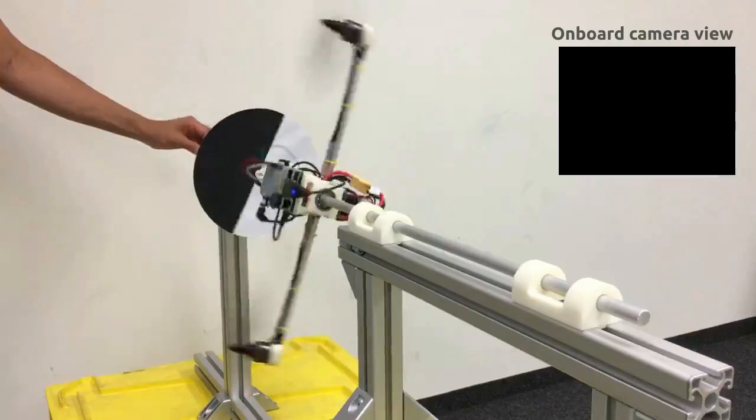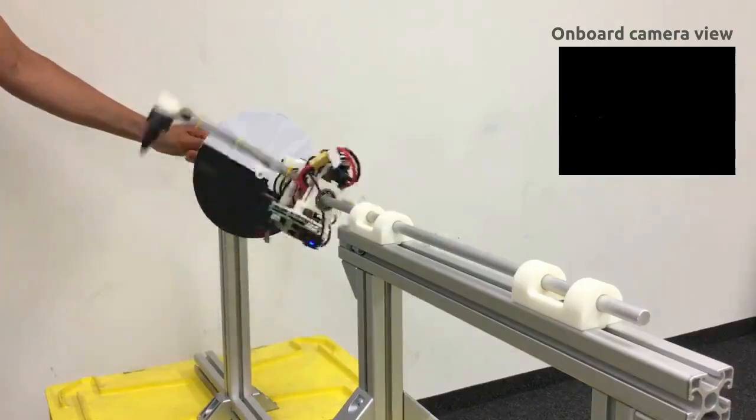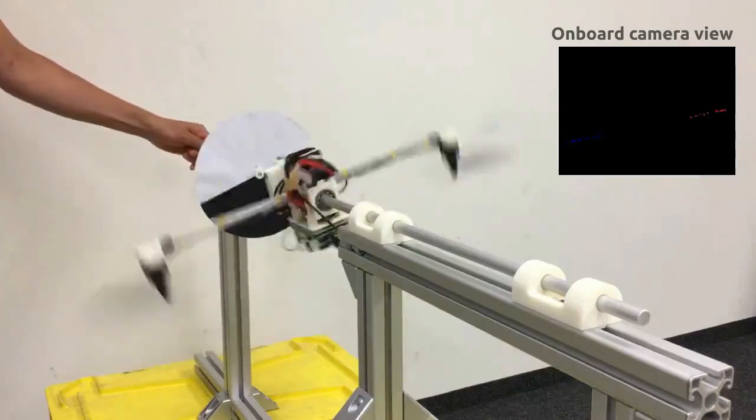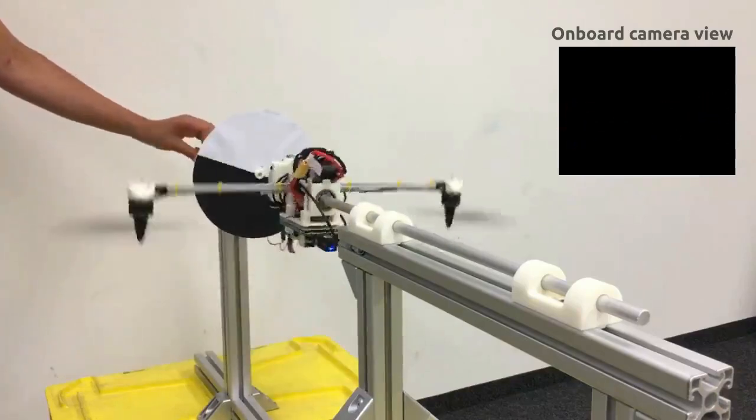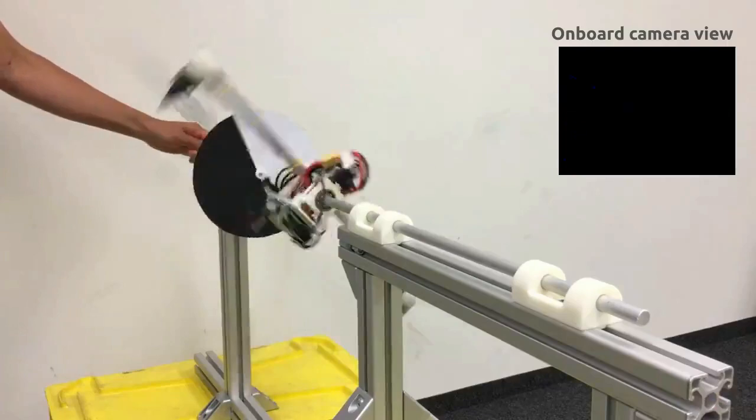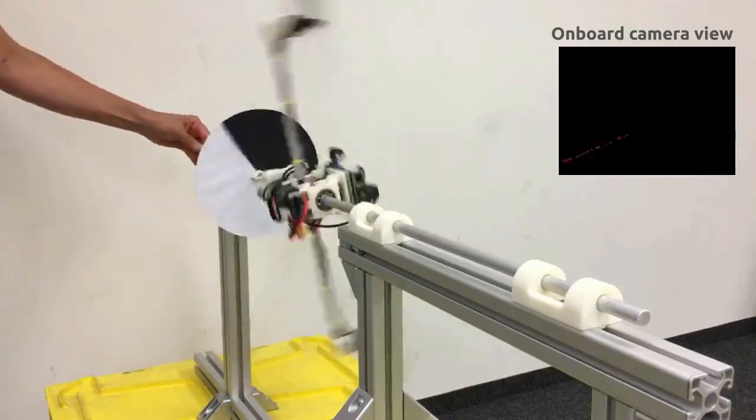Using inputs from the event camera only, the state estimator can efficiently estimate the relative roll angle of the dual-copter with an update rate of 1 kHz, enabling attitude control at low speeds as well as high speeds.